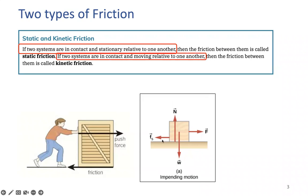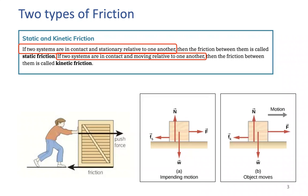When the object and the surface are relatively in motion — when the object is moving relative to the surface — we still have gravity, normal force, and the forward applied force. Now the friction force changes from static to kinetic friction. The free body diagrams look the same; the only difference is that before motion the friction is static, and when in motion it is kinetic.